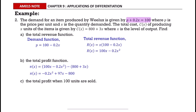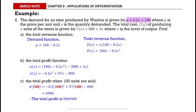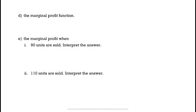The total profit when 100 units are sold can be obtained by substituting 100 into the profit function. The total profit is RM 6,900. The marginal profit function can be obtained by differentiating the profit function.